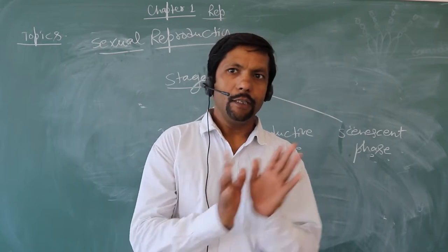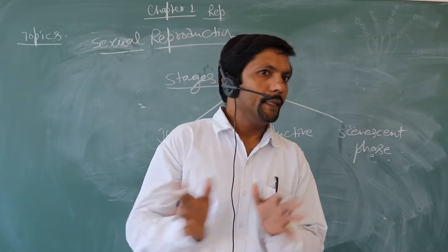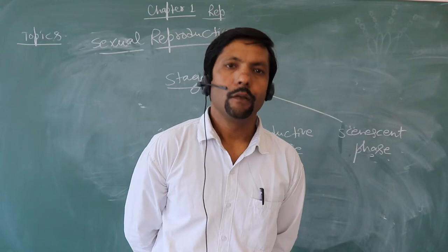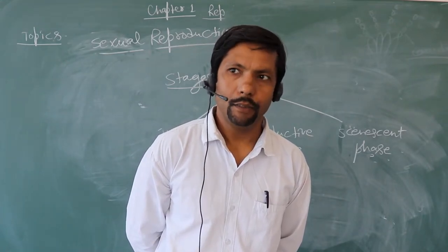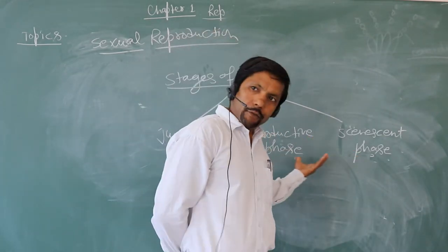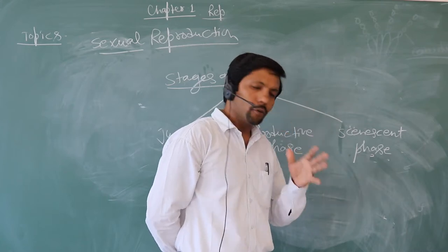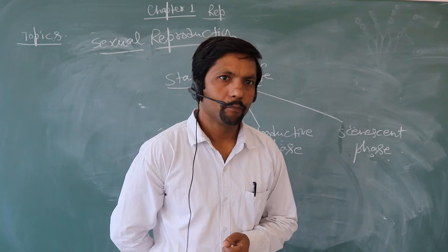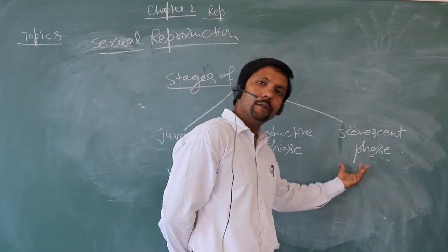Because the flower is the reproductive part, we can say that the plant gets matured and its sexual organs start functioning. The flower contains these sexual organs, which are called the male reproductive part and the female reproductive part. When the sexual parts become non-functional, the last phase of life starts, and this is called the senescent phase.